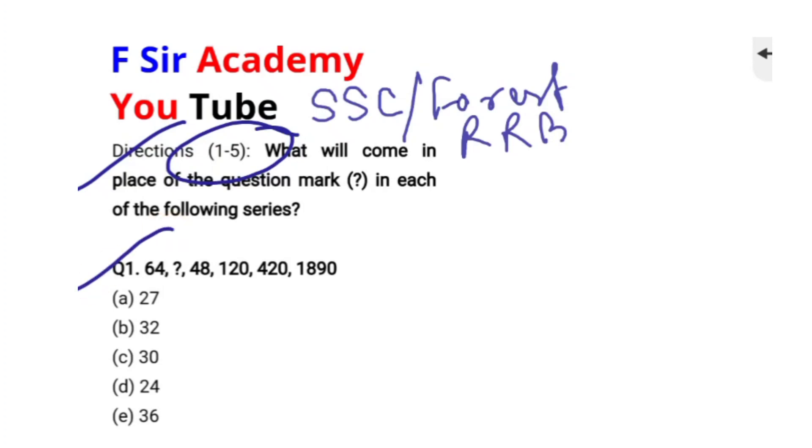Let's see the first question: 64, question mark, 48, 120, 420, 1890. To solve this question we have to multiply each number in this sequence by 1/2, 3/2, 5/2 like this.